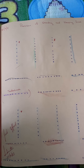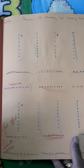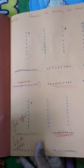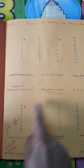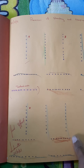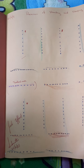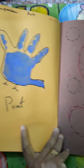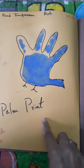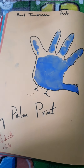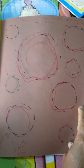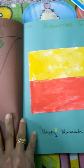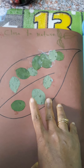In this activity the child traces on dotted lines, saying and tracing the standing line. Then there is palm impression art. Here the child is learning to trace circles.